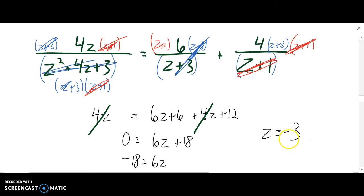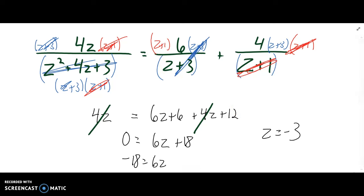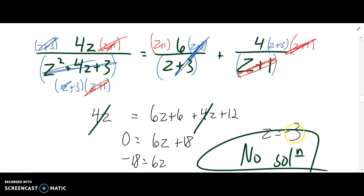Now, the problem with this negative 3 is that if we plug it back in to this denominator, we get a denominator of 0 — we can't have that. And if I plugged it in here, I'd get a denominator of 0 also. So z equals negative 3 is what we got, but this is an extraneous solution. So there are actually no solutions to this one at all — the only one we got didn't work. No solutions.